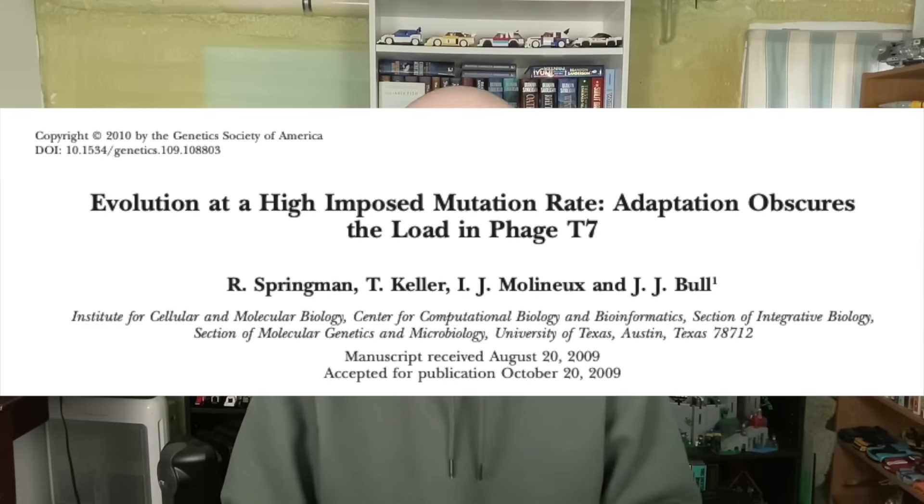There are two specific peer-reviewed papers that prove genetic entropy is wrong. The first is Springman et al. 2010, 'Evolution at a High Imposed Mutation Rate: Adaptation Obscures the Load.' This was an experiment done in bacteriophages — phage T7. The whole point of genetic entropy is that the vast majority of mutations are harmful, so as mutations build up, extinction must result. But in this study, where they increased the mutation rate of the viruses, there was no extinction. The viruses reached an equilibrium between beneficial and harmful mutations and selection, exactly as standard population genetics predicts, directly disproving genetic entropy.